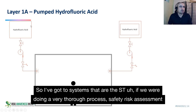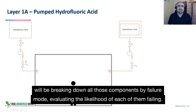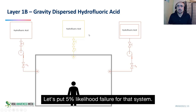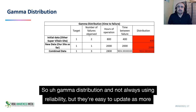I've got two systems that are the same. If we were doing a very thorough process safety risk assessment, we'd be breaking down all those components by failure mode, evaluating the likelihood of each of them failing — let's put a 5% likelihood of failure for that system.